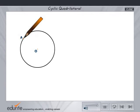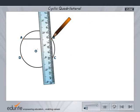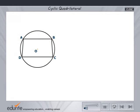Mark four points A, B, C and D on the circumference of the circle. Join A to B, B to C, C to D and D to A. Thus, a quadrilateral ABCD is formed inside the circle.